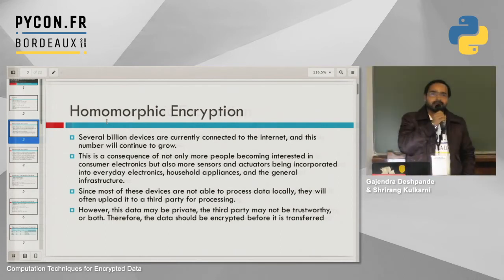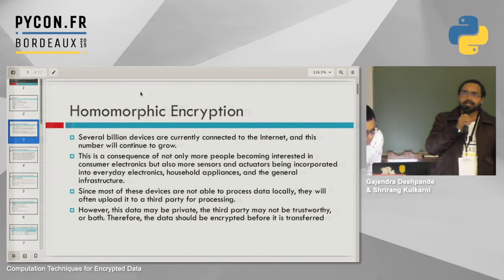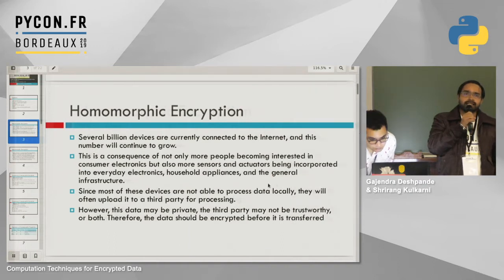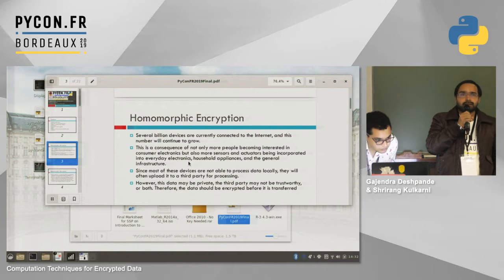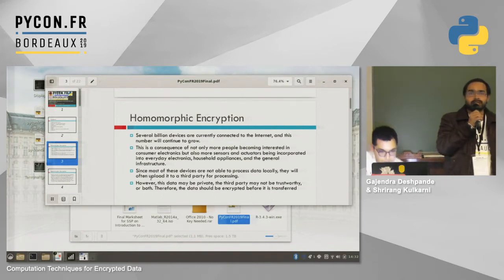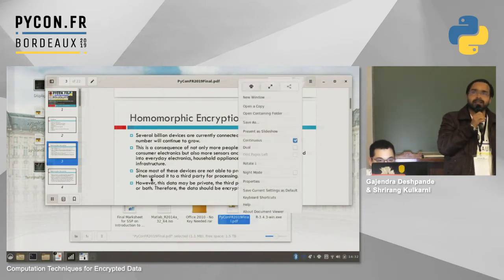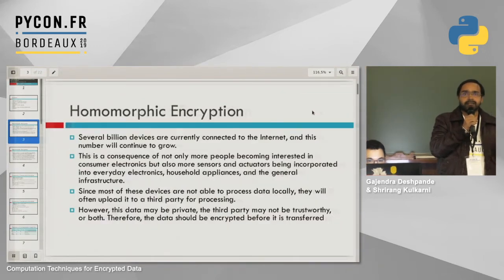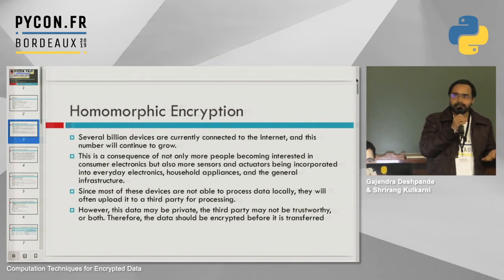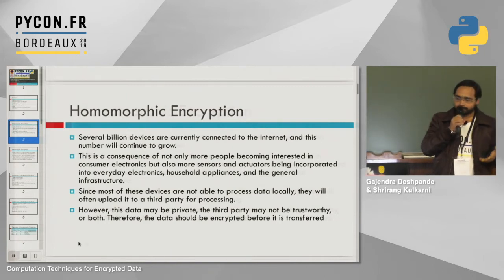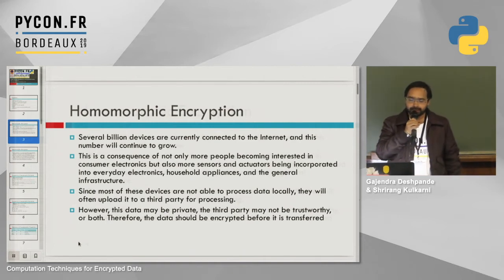Why is homomorphic encryption important today? Because due to the emergence of IoT — the Internet of Things — a lot of data is being generated by sensors. Whatever data is generated by these sensors is not encrypted, because sensors don't have the capability to encrypt data. It will be uploaded to cloud or some third-party vendor. Although this data may be private, we can't always trust the service provider, and there is a possibility of compromising the data. We can avoid that by using homomorphic encryption.